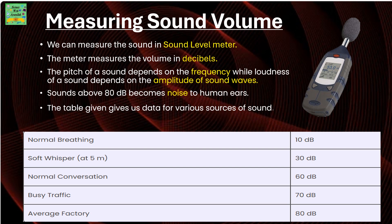Measuring sound volume: you can measure sound using a sound level meter, as discussed before. The meter measures volume in decibels. The pitch of a sound depends on the frequency of sound waves. Sounds above 80 decibels become noise to human ears — meaning they are unpleasant. The table below gives data for various sources of sound: normal breathing is 10 decibels; a soft whisper at 5 meters is 30 decibels; normal conversation is 60 decibels; busy traffic with continuous honking is 70 decibels; and an average factory is 80 decibels — above 80 is considered noise.